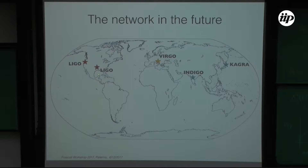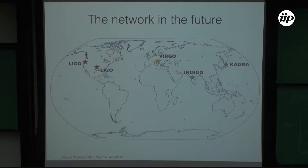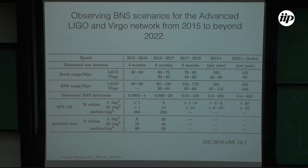Originally there were two LIGO instruments. During O2, the observational campaign mostly in 2017, Virgo joined near the end. Currently we're in O3, which started in April, and three detectors are working. Eventually they'll be joined by a detector identical to LIGO located in India called IndIGO, and the Japanese collaboration is putting KAGRA online probably very soon, much sooner than IndIGO.